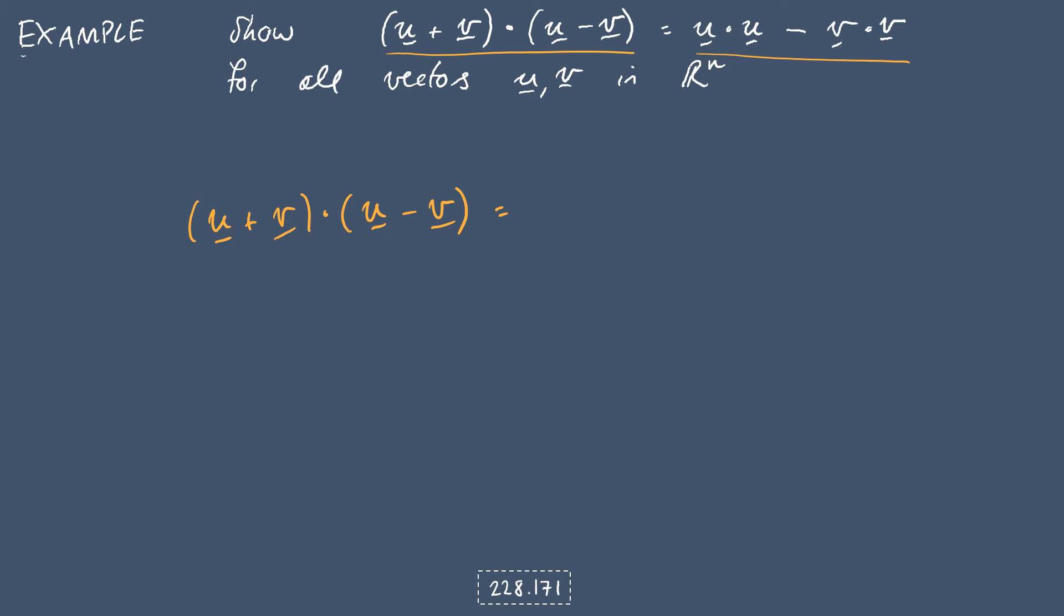Now what we'll do is we'll expand our brackets one at a time. So remember the rule that we had on the previous slide was something like u dot (v plus w) equals u dot v plus u dot w. So we'll expand out this vector, and we'll keep u plus v together as our u in the top one, and then we'll expand out the other side. So that will be (u plus v) dot u minus (u plus v) dot v.